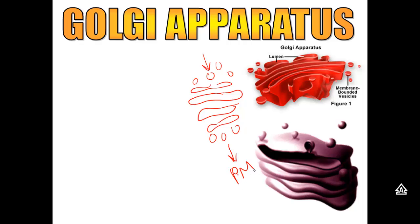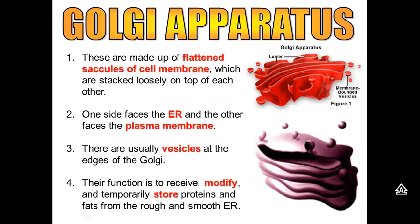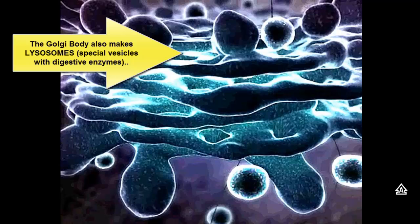The Golgi sends things away from itself as vesicles, usually out to the plasma membrane. So what does the Golgi do? It receives proteins and hormones from the smooth ER and the rough ER, and then it modifies them, changes them, makes them functional. And it stores them until they're ready to be released.